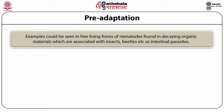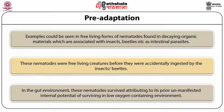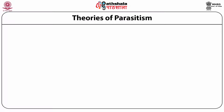Examples can be seen in free-living forms of nematodes found in decaying organic materials which are associated with insects, beetles, etc. as intestinal parasites. These nematodes were free-living creatures before they were accidentally ingested by the insects and beetles. In the gut environment, these nematodes survived by attributing to their prior unmanifested internal potential of surviving in a low-oxygen-containing environment.